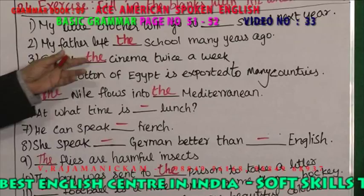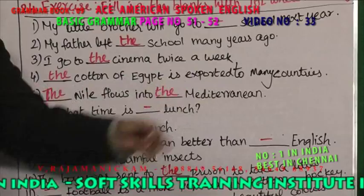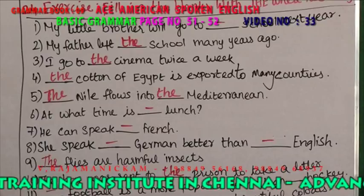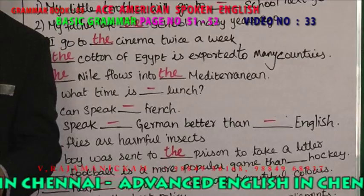I go to the cinema twice a week. The cotton of Egypt is exported to many countries — 'the cotton of Egypt.' The Nile flows into the Mediterranean. In front of a river like the Nile, you use 'the.' In front of an ocean or sea, you also use 'the.'